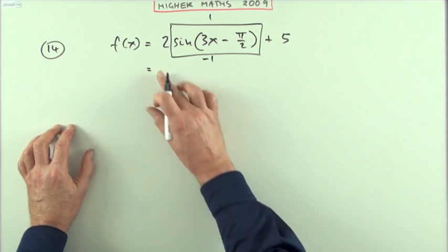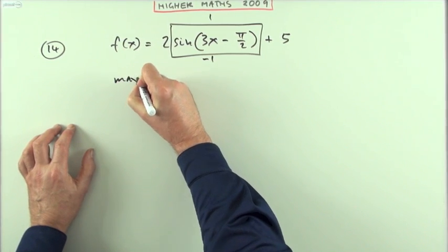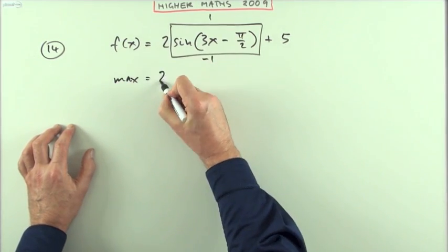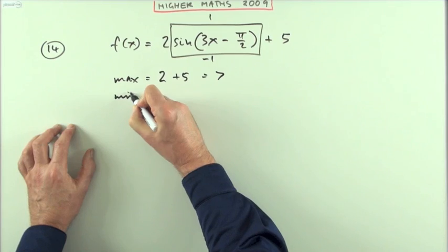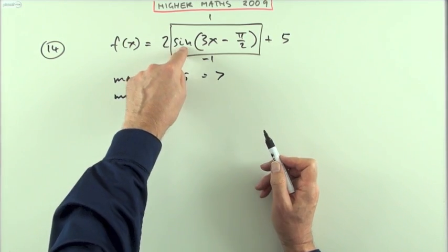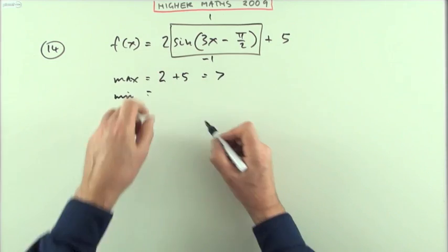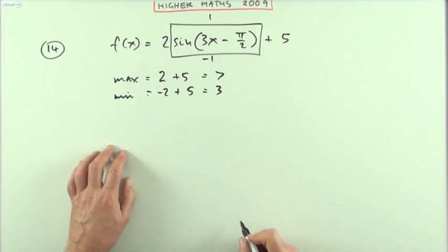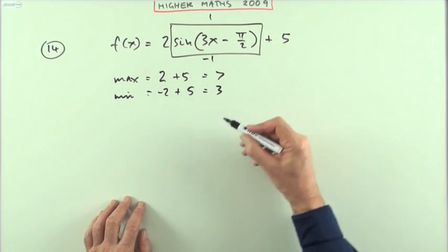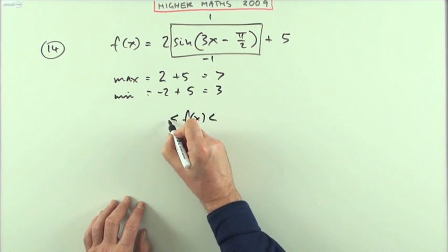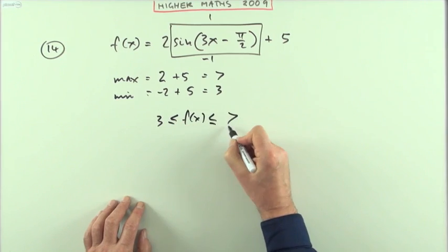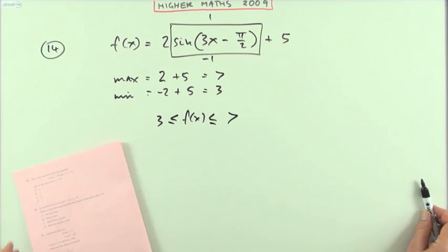So the greatest possible answer I could get would be, for the maximum, 2 × 1 = 2 + 5 = 7. The lowest value I could ever get would be when this sine gave me an answer of -1, so it'd be -2 + 5 = 3. Which makes the range of answers in between, so f(x) would have to lie between—and it can equal them of course—3 and 7, which is C.